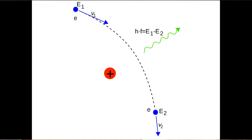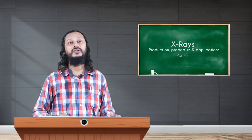So this is Bremsstrahlung, another way in which X-rays are produced because of electron interaction with matter.